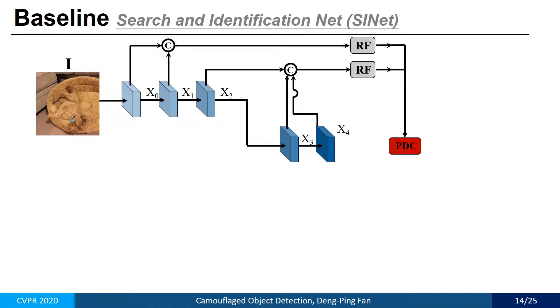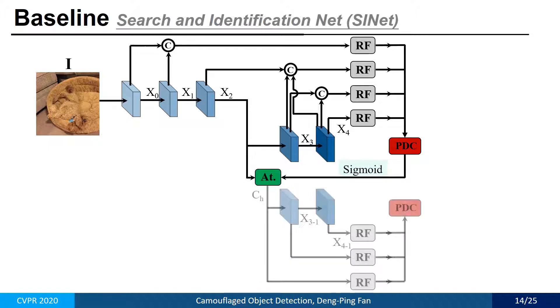Input an image, SINET leverages a densely connected strategy to preserve more information from different layers and then uses the modified RF component to enlarge the receptive field. Then, through an attention module, we repeat this process and get the final result.